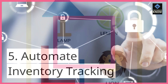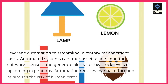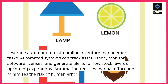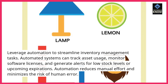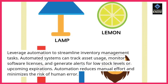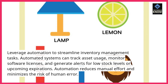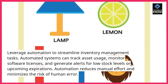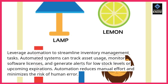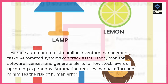Tip 5: Automate inventory tracking. Leverage automation to streamline inventory management tasks. Automated systems can track asset usage, monitor software licenses, and generate alerts for low stock levels or upcoming expirations. Automation reduces manual effort and minimizes the risk of human error.